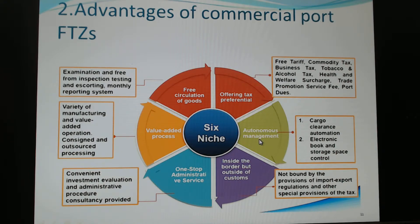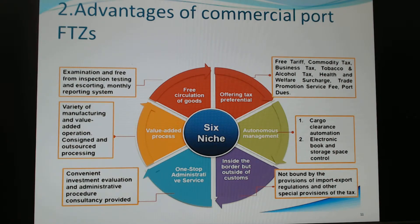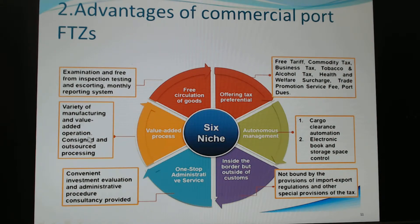Autonomous management means the Customs Authority recognizes their system — they can automate cargo clearance and use electronic bookkeeping and storage space control. Another advantage is being inside the border but outside customs, so they are not bound by import and export regulations. A fourth niche is one-stop administration service — you can use this to apply for anything and receive consultant suggestions from the government. The zone also allows very active logistics activity, including simple manufacturing.